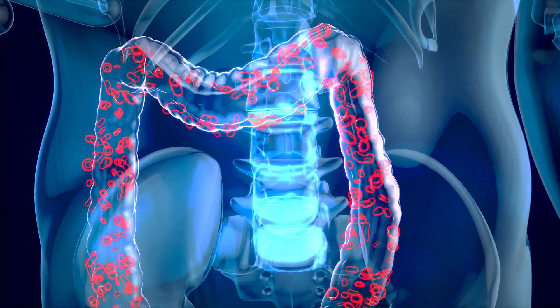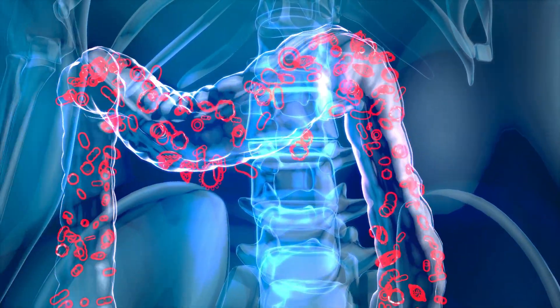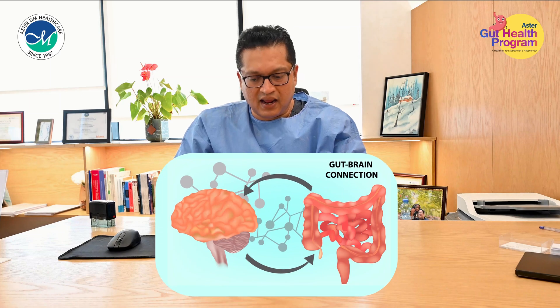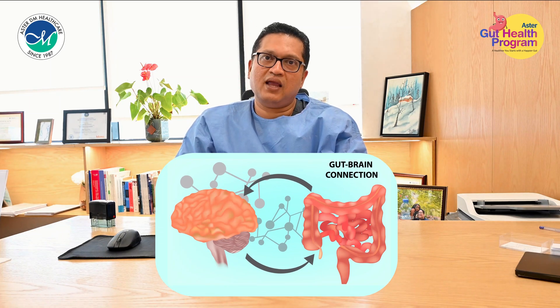Gut health forms a complex interaction between your gut microbiome — which includes bacteria, viruses, and fungi — and your body in general. The gut microbiome has a lot of complex functions: it aids in digestion, it produces antioxidants, it helps in connecting with your brain through the gut-brain axis, and it also aids in nutrient absorption.